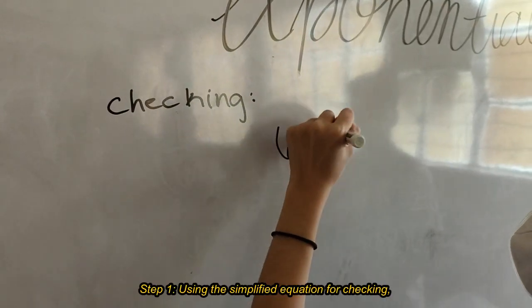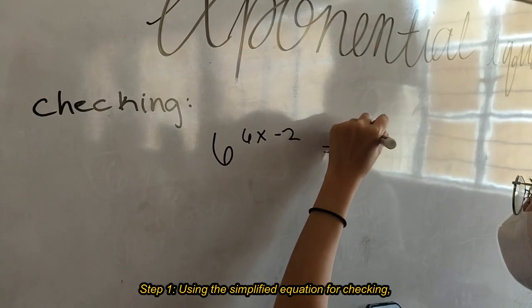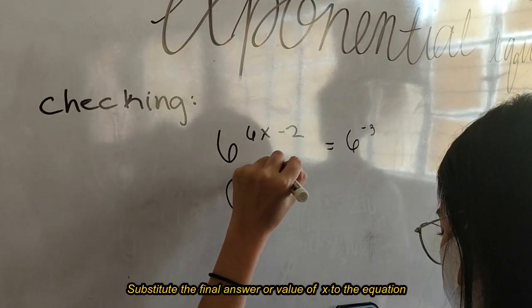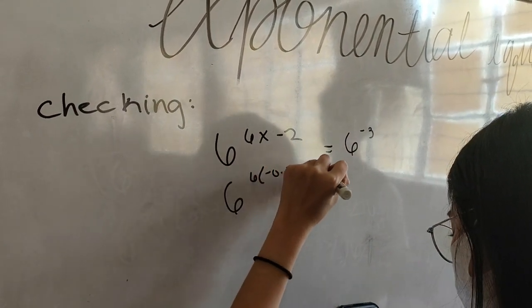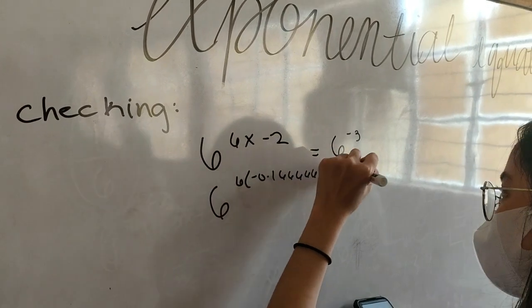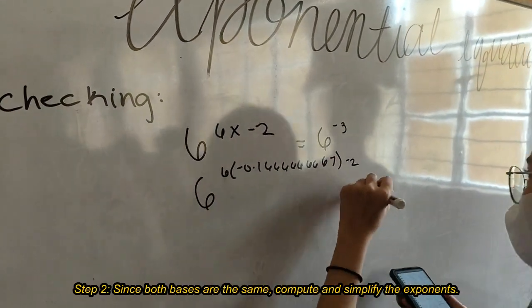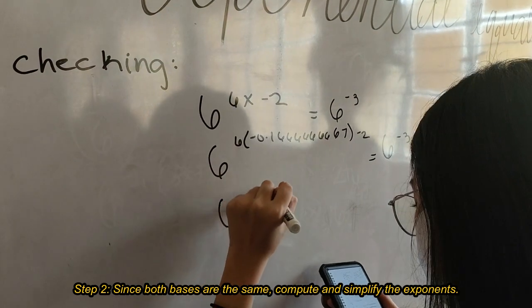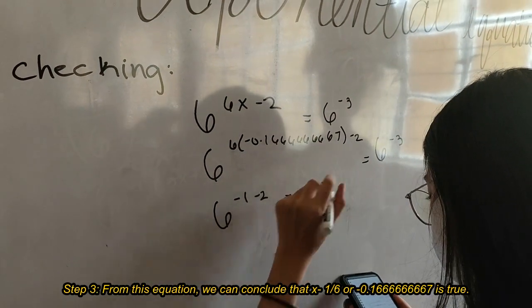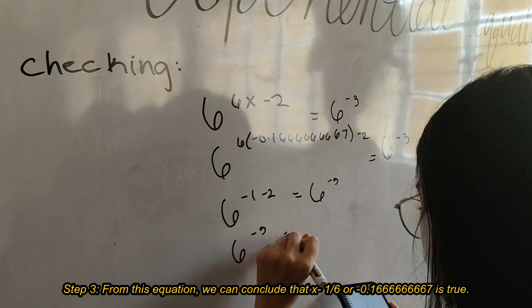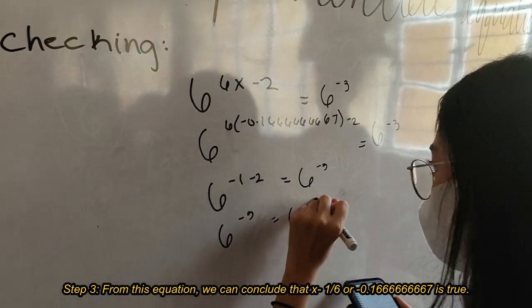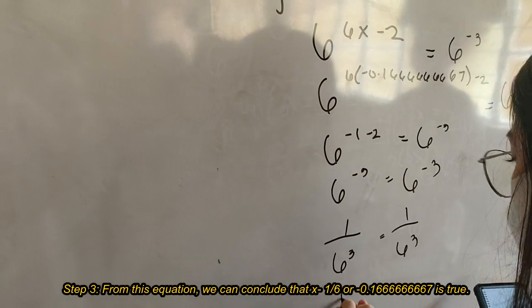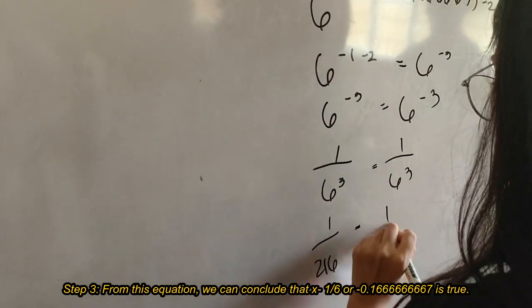Checking: using the simplified equation, substitute the final answer or value of x into the equation. Since both bases are the same, compute and simplify the exponents. From this equation, we can conclude that x equals negative 1 over 6, or negative 0.1666666666667, is true.